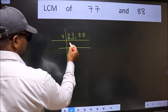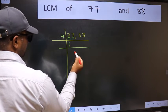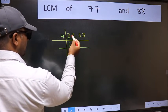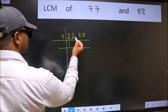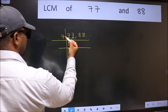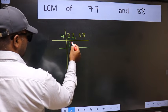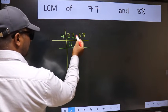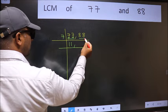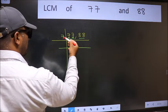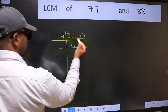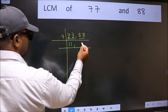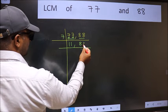When do we get 77 in the 7 table? 7 times 11 is 77. The other number is 88 — not divisible by 7, so you write it down as it is.